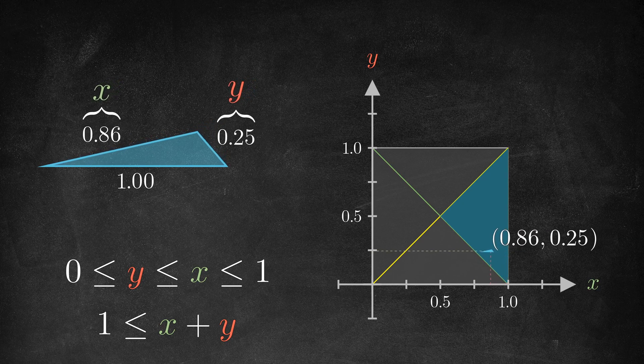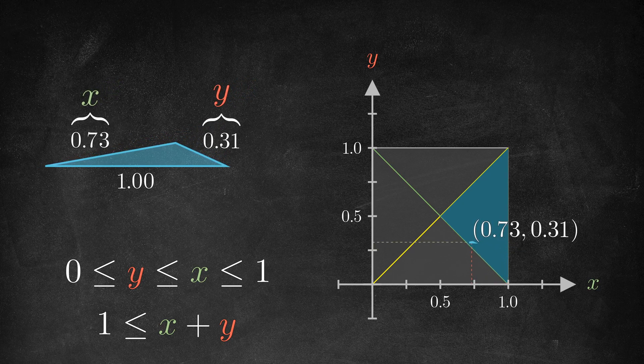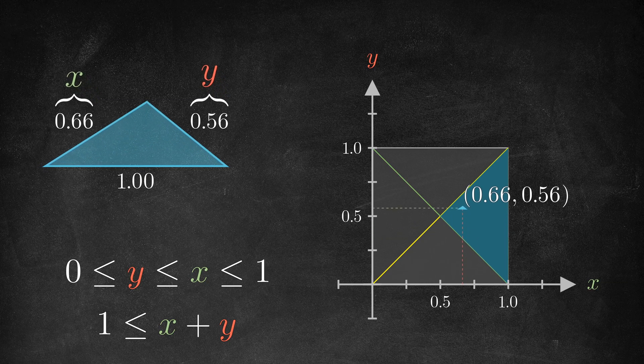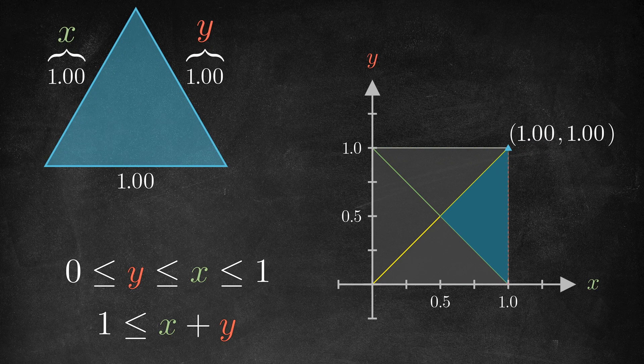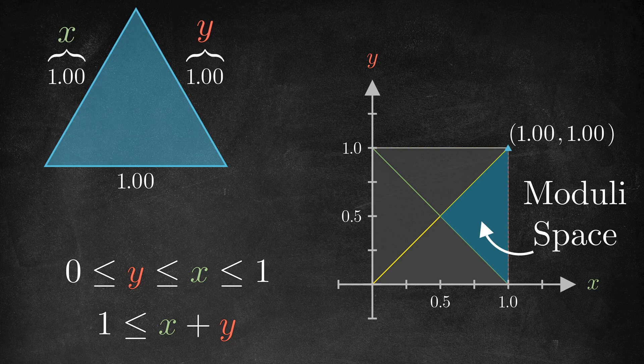Every point in this region corresponds to a unique similarity class of triangles, with smooth changes to the point resulting in smooth changes to the corresponding triangle. We would call this region the moduli space for all triangles up to similarity.